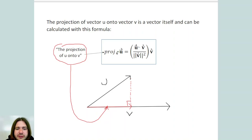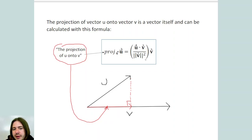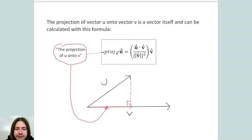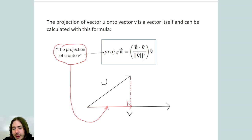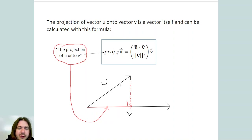A dot product is a scalar and magnitude is a scalar, so everything inside the parentheses is going to end up being a single number — a scalar. You'll then multiply that scalar by vector v. Basically you take vector v and multiply it by the appropriate scale factor to either shrink it or make it bigger, and you'll get your projection vector. If I wanted to project v onto u rather than u onto v, I'd swap the vectors.